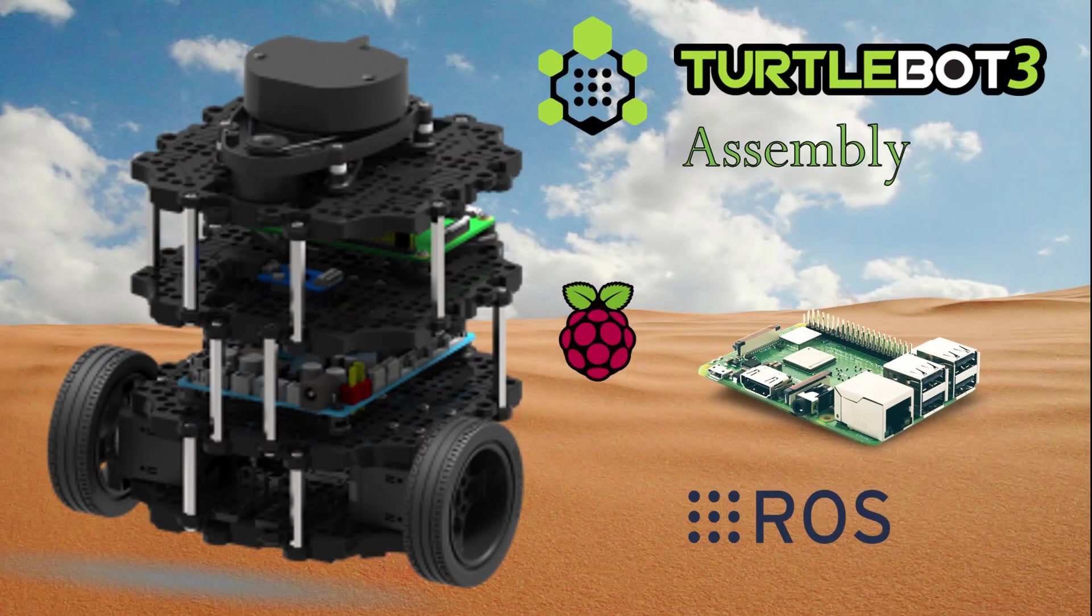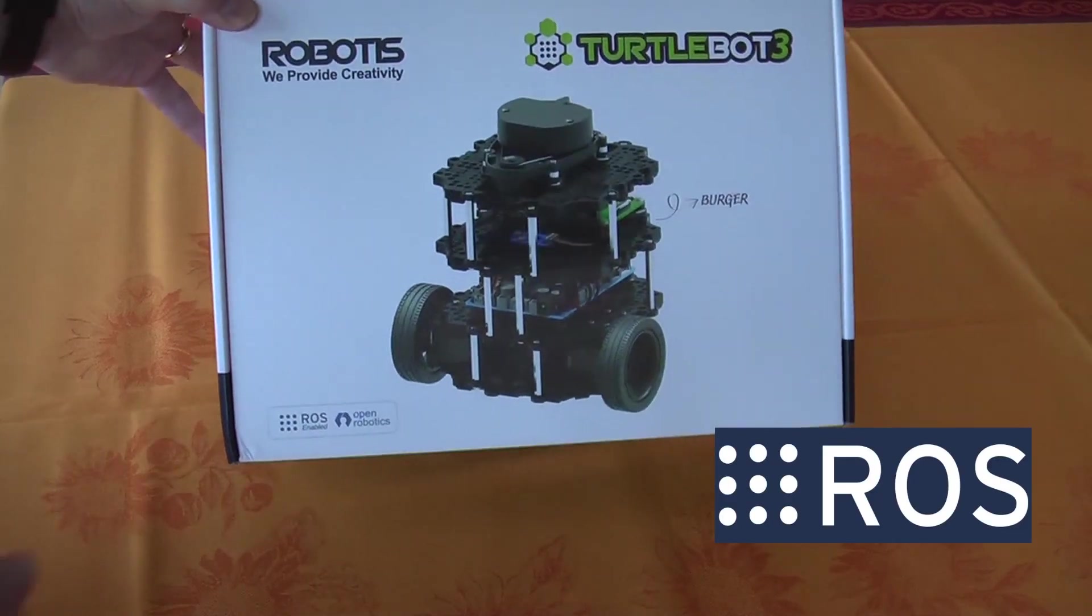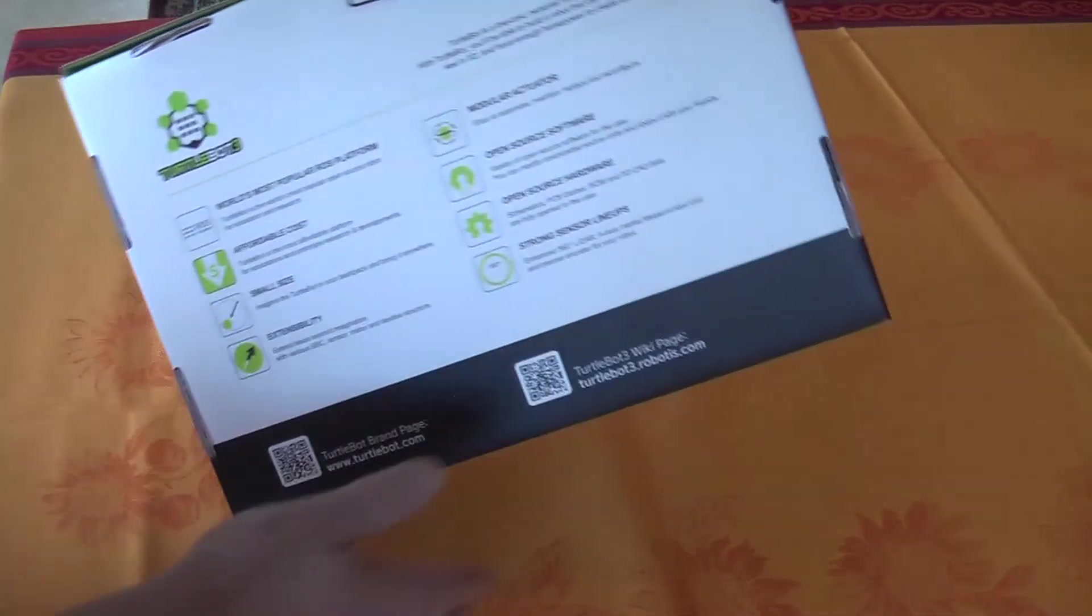This is the build of my TurtleBot 3 Burger Robot, which is powered by a Raspberry Pi 3, running the robotic operating system ROS. I'll talk about the assembly and show you what it looks like.